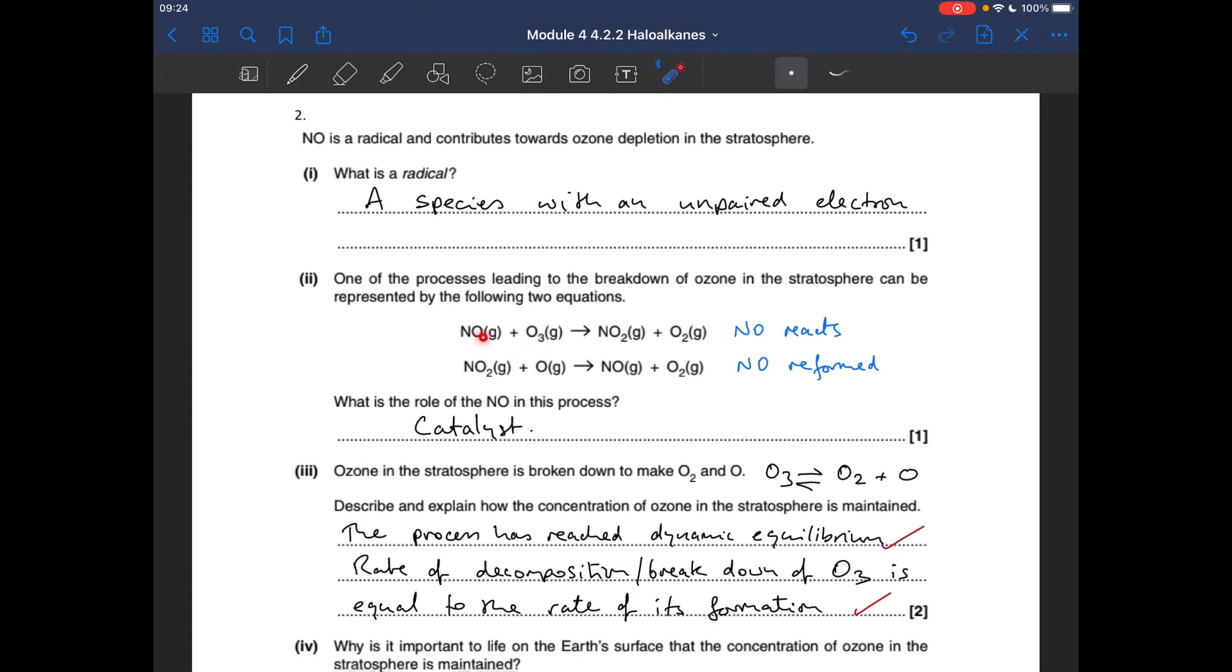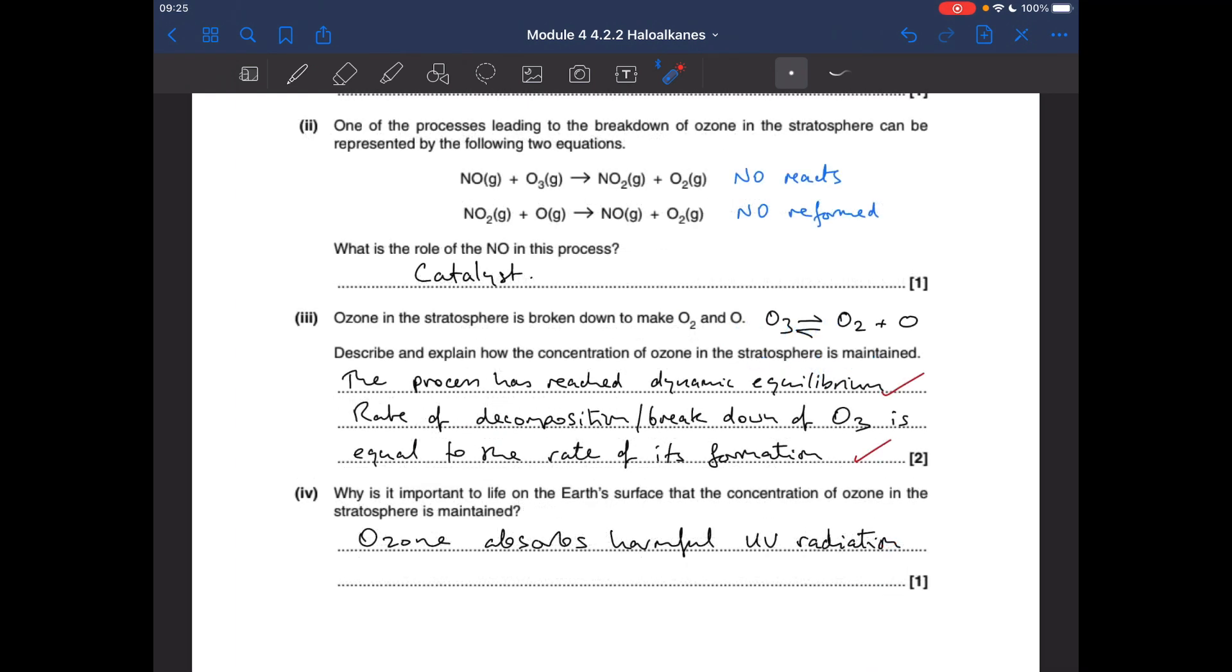You can see in the first equation, the NO reacts with the ozone. Then in the second equation, the NO is reformed. So it's acting as a catalyst - it's used up but then reformed. Ozone in the stratosphere is broken down to make O2 and O. So we've got this equilibrium that actually exists in the stratosphere.